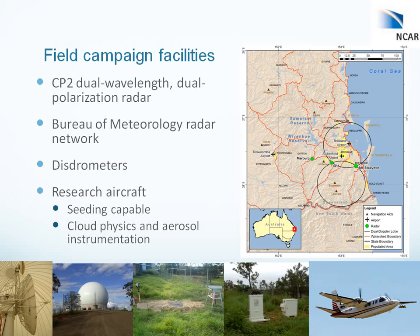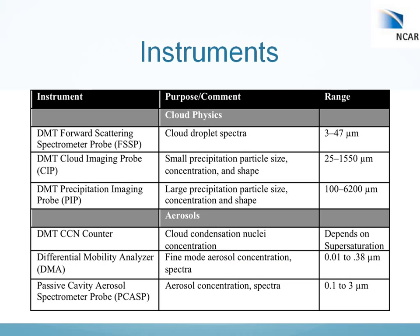We had ground-based raindrop distrometers and a research aircraft capable of seeding with hygroscopic flares, with cloud physics and aerosol instrumentation. The key instruments I'm going to be discussing are the FSSP, or Forward Scattering Spectrometer Probe, which measures cloud droplet spectra of about 3 to 47 microns. We also had a cloud imaging probe and a precipitation imaging probe, which we used to identify regions within the cloud influenced by rain falling from above and to exclude measurements with potential rain contamination.